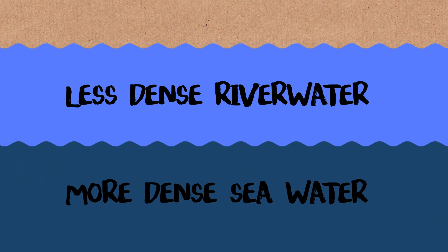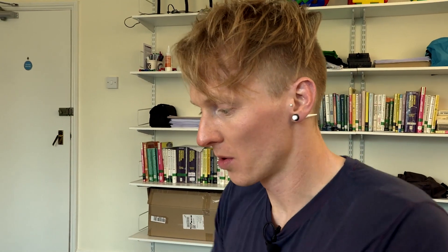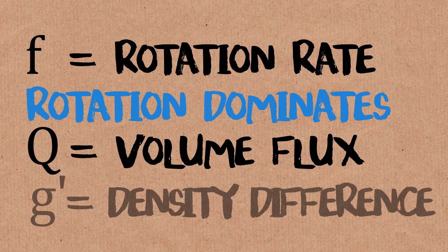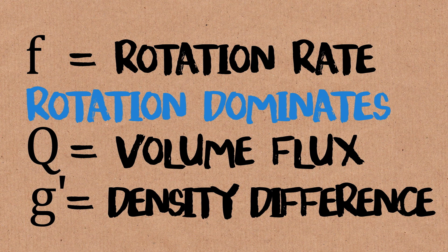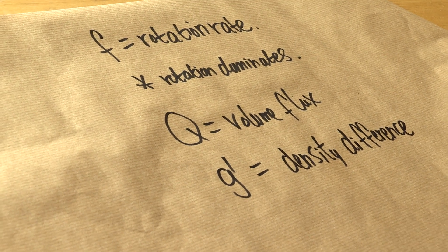The third and final thing we're going to need is the density difference. River water is going to float on top of the saltwater. That's why we want to know the depth of that top layer. So we're going to model that with what we call the reduced gravity, G prime. But for our purposes, that's just the density difference. It's just a formula which involves the density of the river water, the density of the saltwater, the ocean, and gravity. So these are our three key parameters.